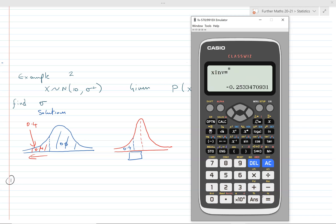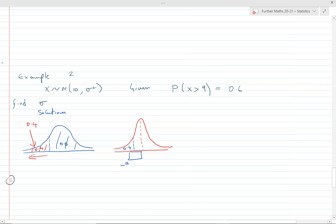That's the z value corresponding to 0.4. We can then just use the transformation.